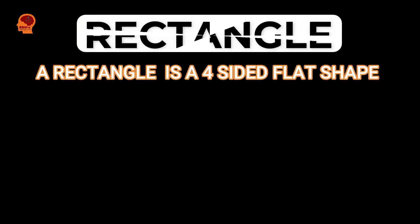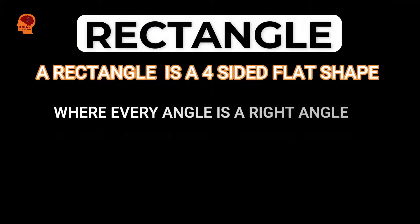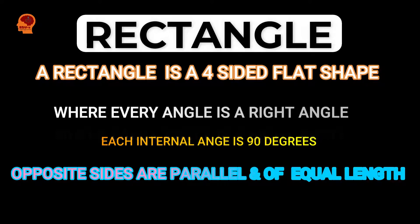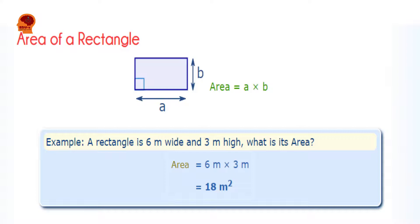A rectangle is a four-sided flat shape where every angle is a right angle. Just like the square, each internal angle is 90 degrees, opposite sides are parallel and of equal length, so it is a parallelogram. The area of a rectangle is calculated as: Area = length × breadth.